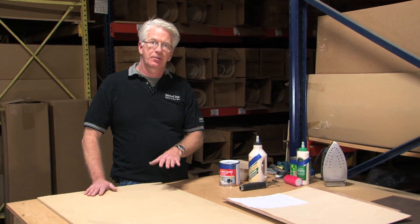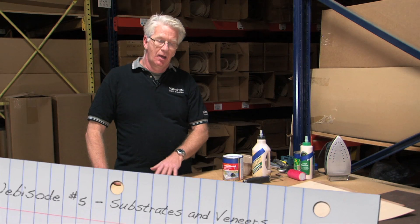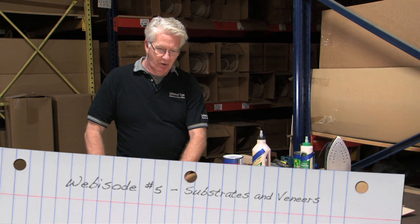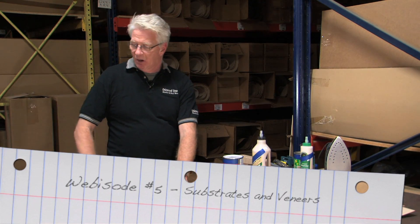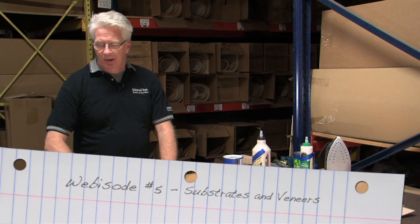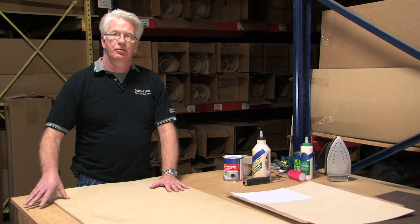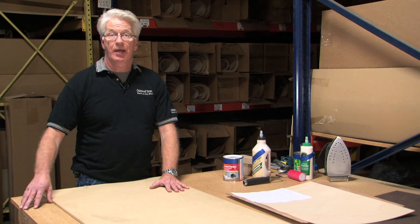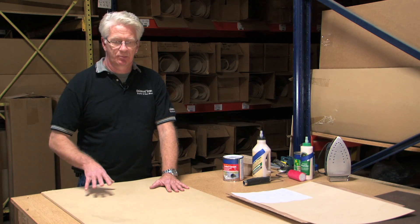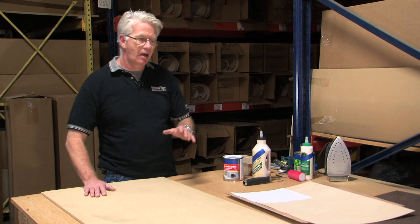The most common substrates used in veneering are MDF, which I have in front of me here, and also particle board. There's very little difference between the two with the exception of weight — one is much heavier than the other.